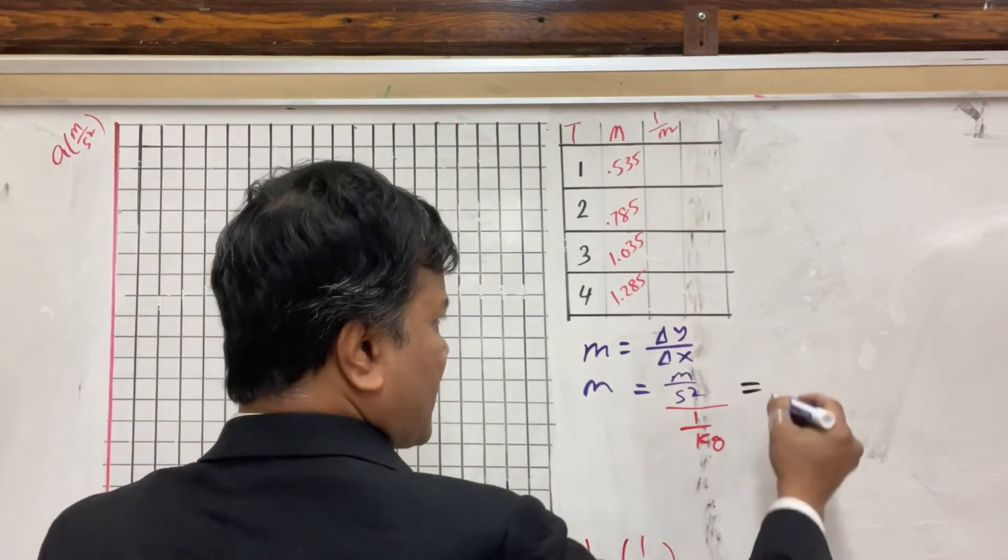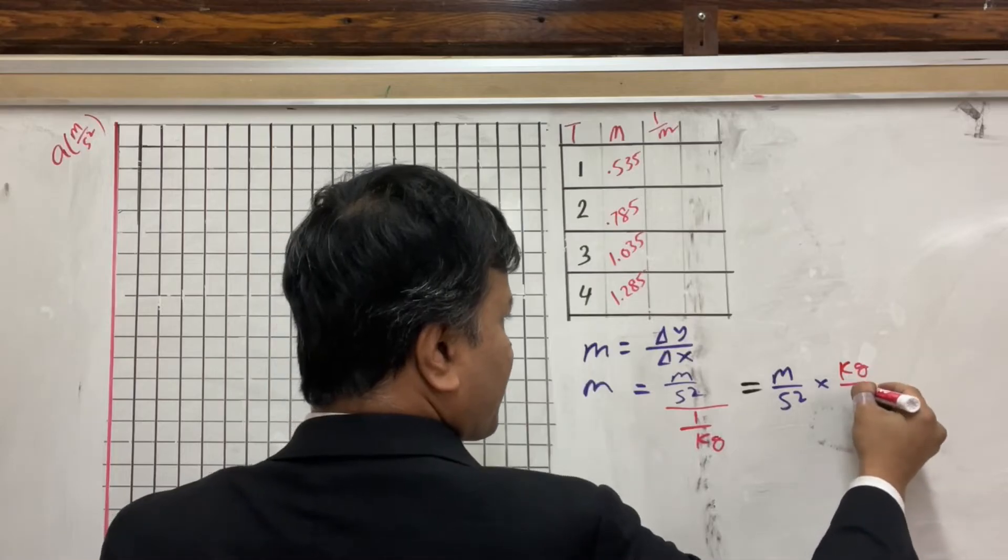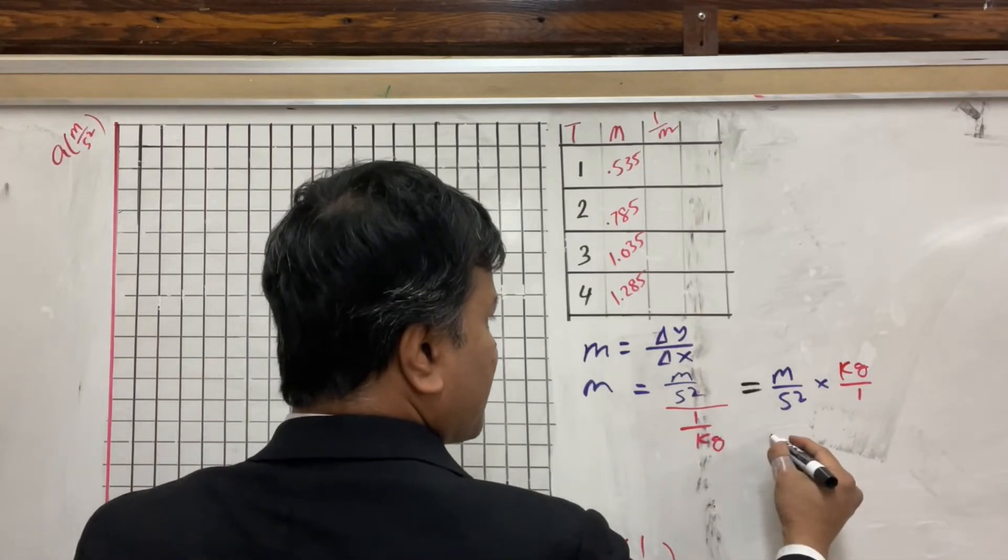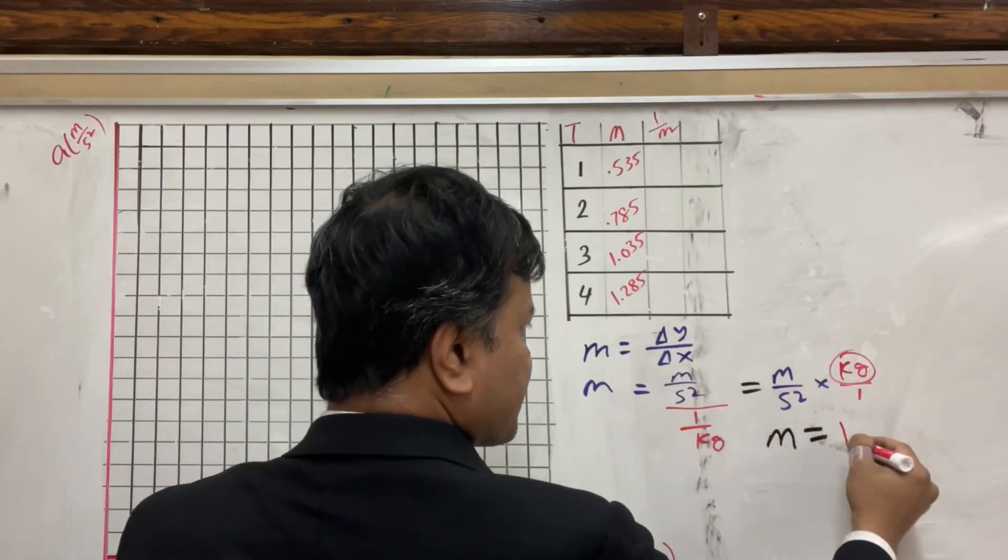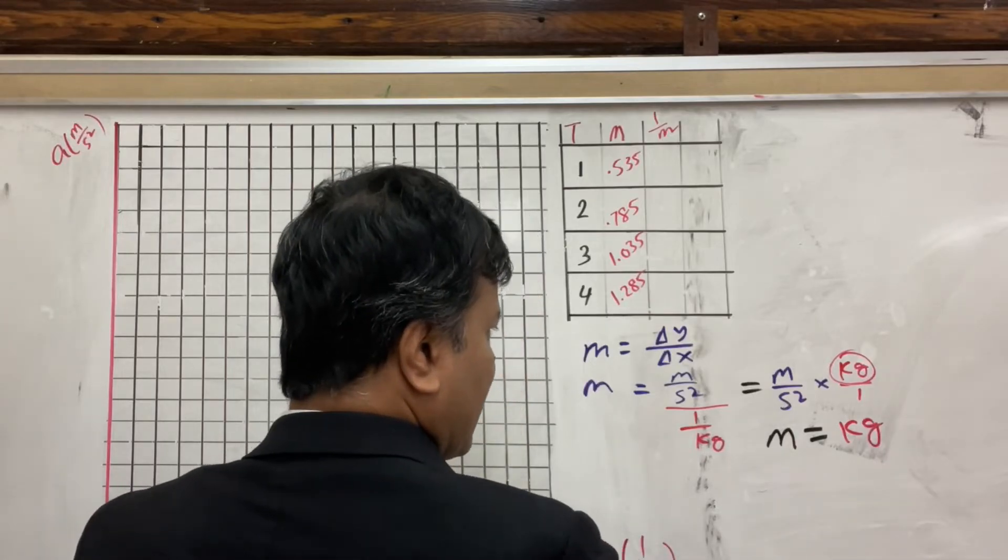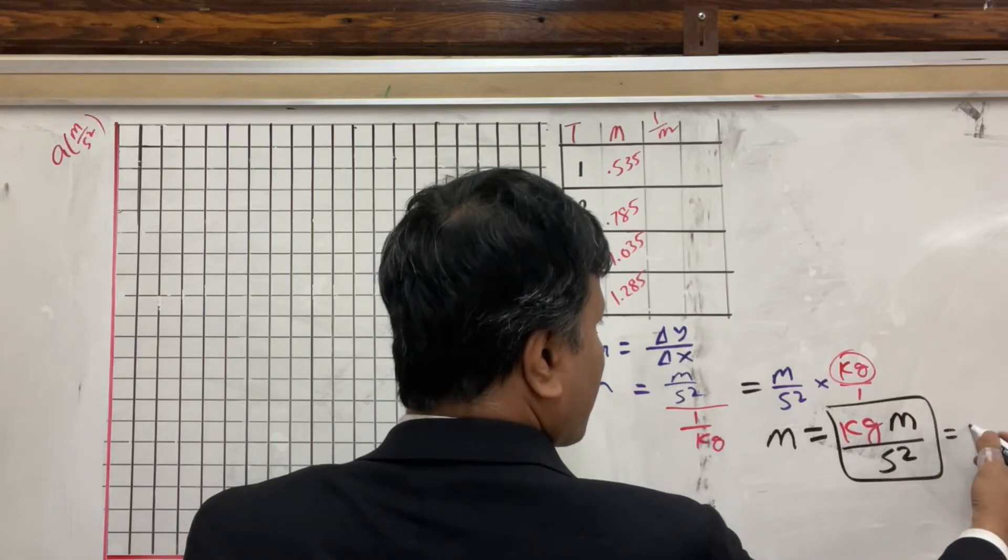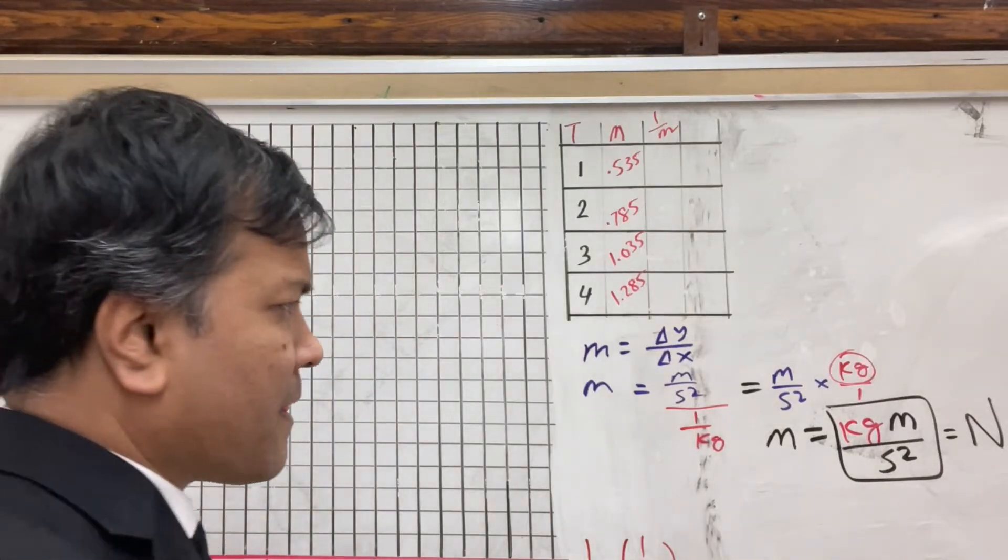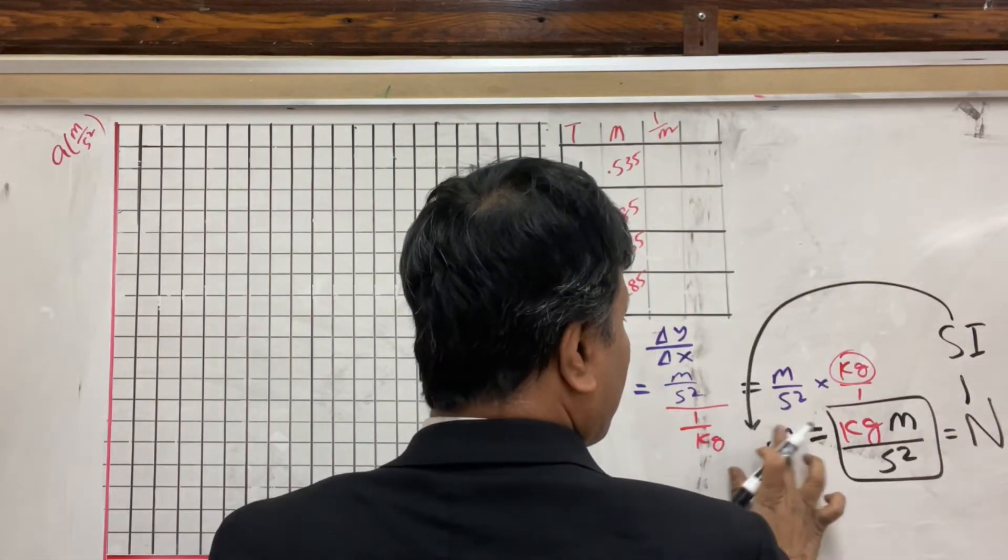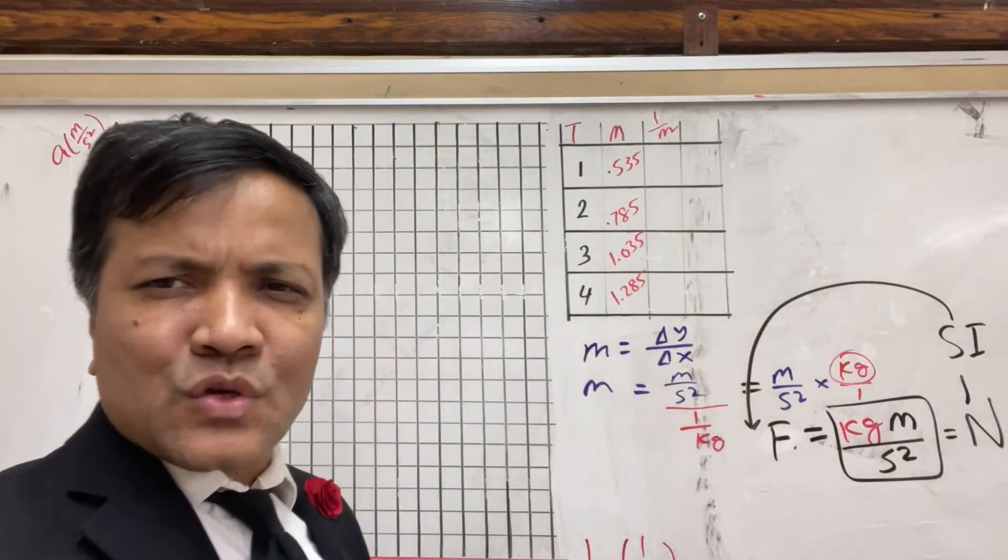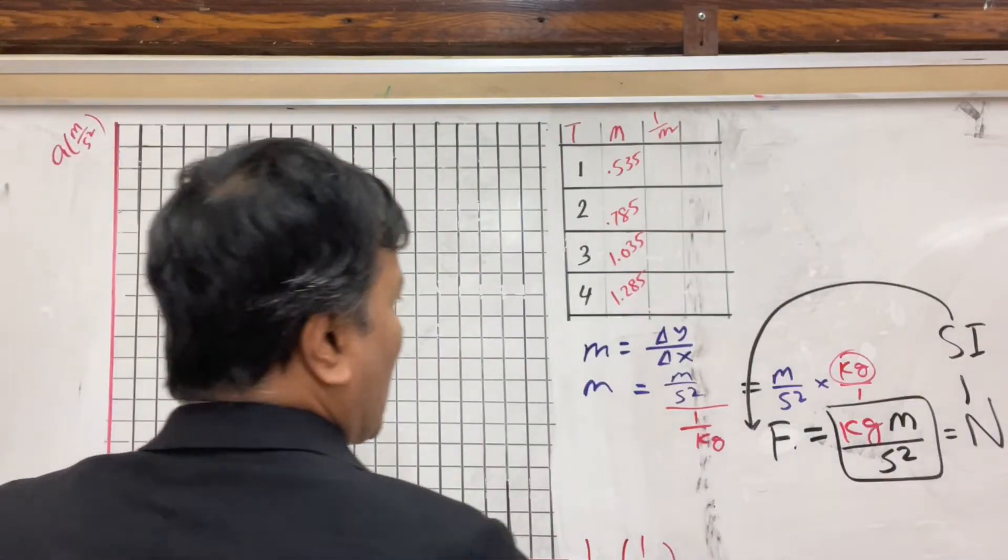What is delta y? Meters per second squared. And what is delta x? Of course, 1 over kilogram. So if you simplify, you have meters per second squared, multiply kilogram over 1. So you can rewrite this statement, which is, the slope is kilogram meters per second squared. Kilogram meters per second squared has a name, which is, of course, newton. And newton is the SI unit for a quantity that is called force.